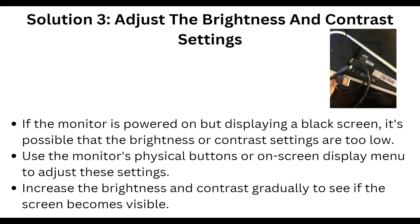Next, adjust the brightness and contrast settings. If the monitor is powered on but displays a black screen, it's possible that the brightness or contrast settings are too low. Use the monitor's physical buttons or on-screen display menu to adjust these settings. Increase the brightness and contrast gradually to see if the screen becomes visible.